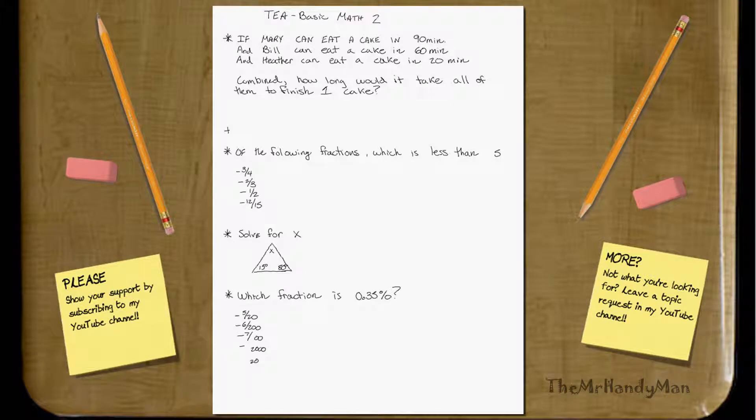Alright, this is TBasicMath2, and we're going to start off with another made-up problem here. If Mary can eat a cake in 90 minutes, and Bill can eat a cake in 60 minutes, and Heather, sorry babe, can eat a cake in 20...